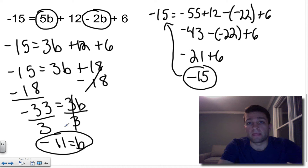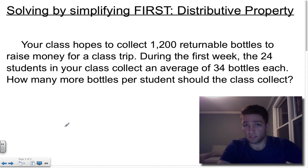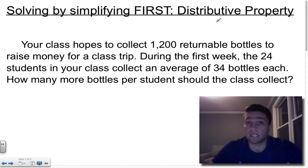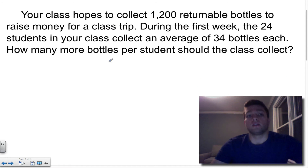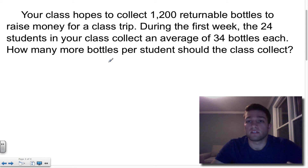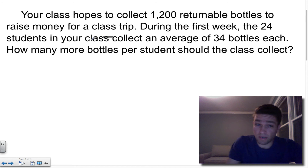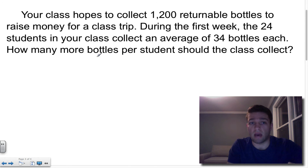The steps are: combine like terms, combine like terms again, then inverse operations twice, and you've got your final answer. The other way to simplify first is by using the distributive property. I'm going to do distributive property with word problems because it's always good to practice. First we come up with the equation, then simplify, then solve. Here's the first problem: your class hopes to collect 1,200 returnable bottles to raise money for a class trip. During the first week, the 24 students collect an average of 34 bottles each. How many more bottles per student should the class collect?